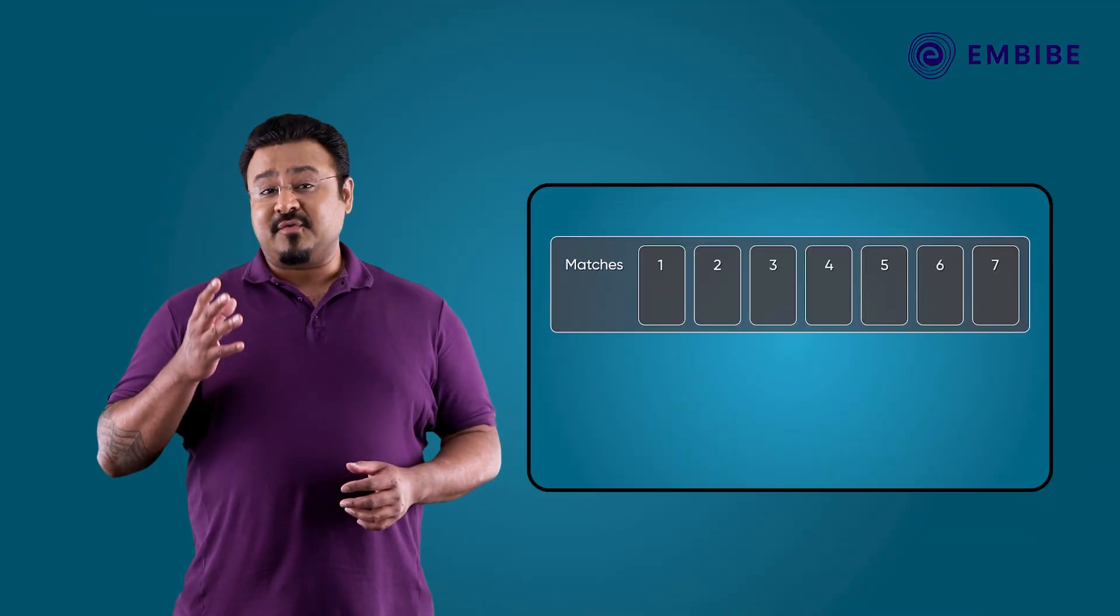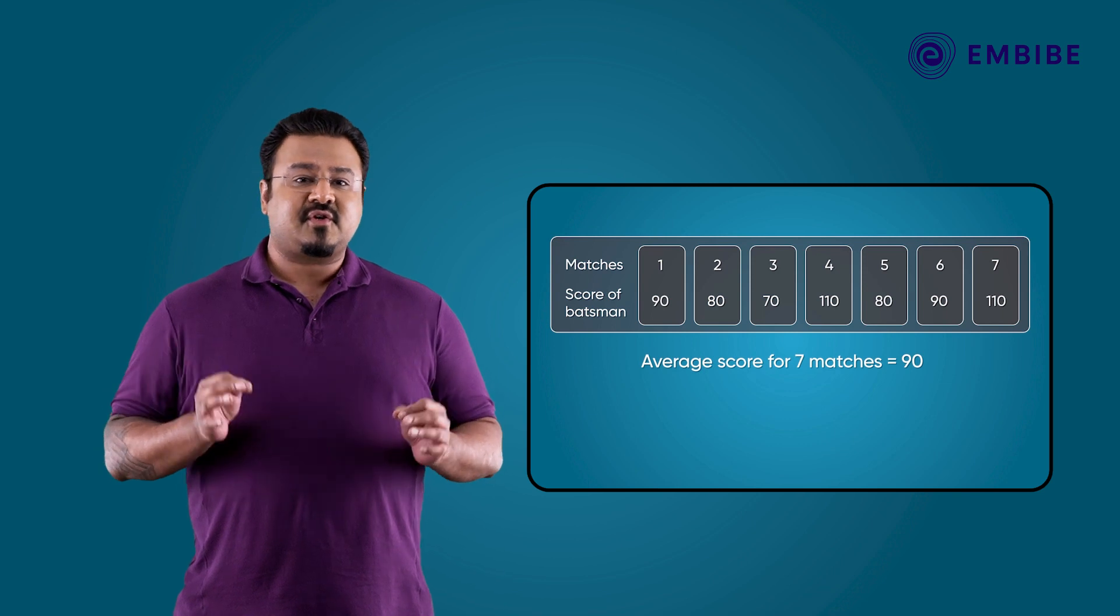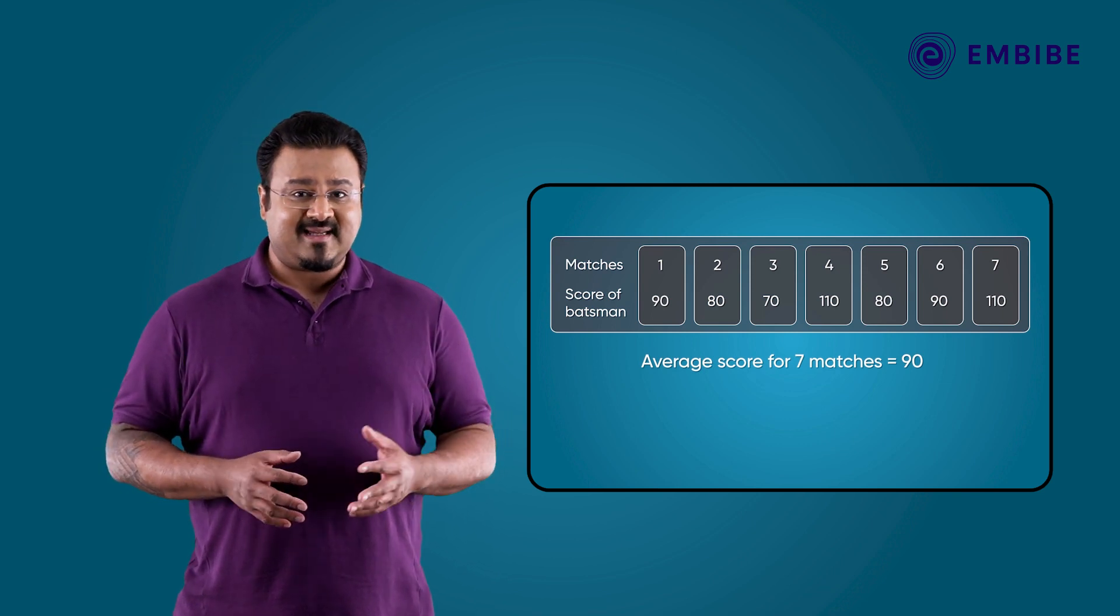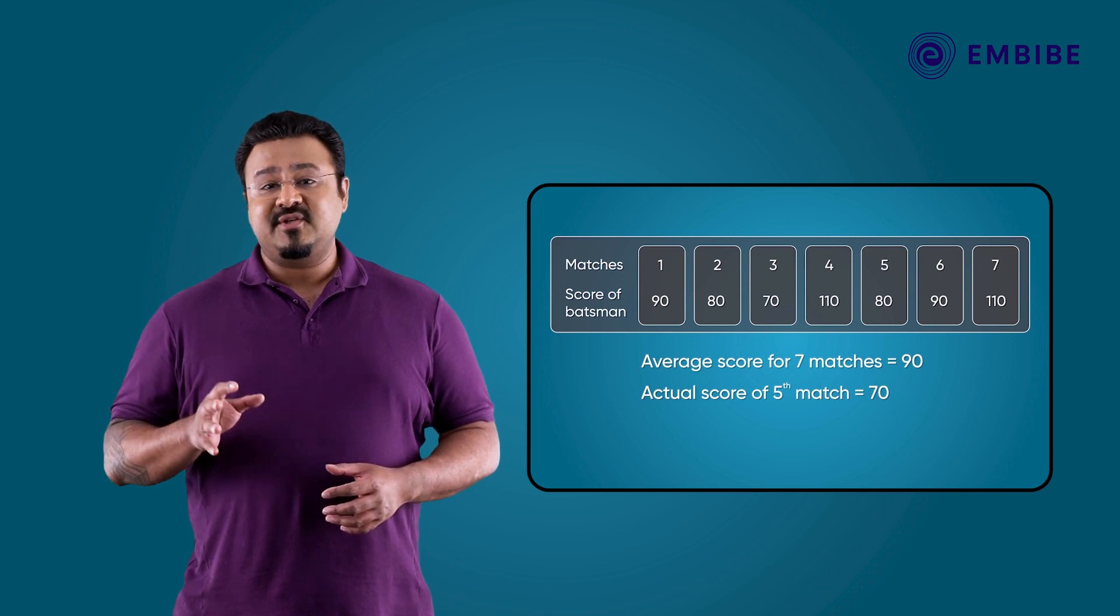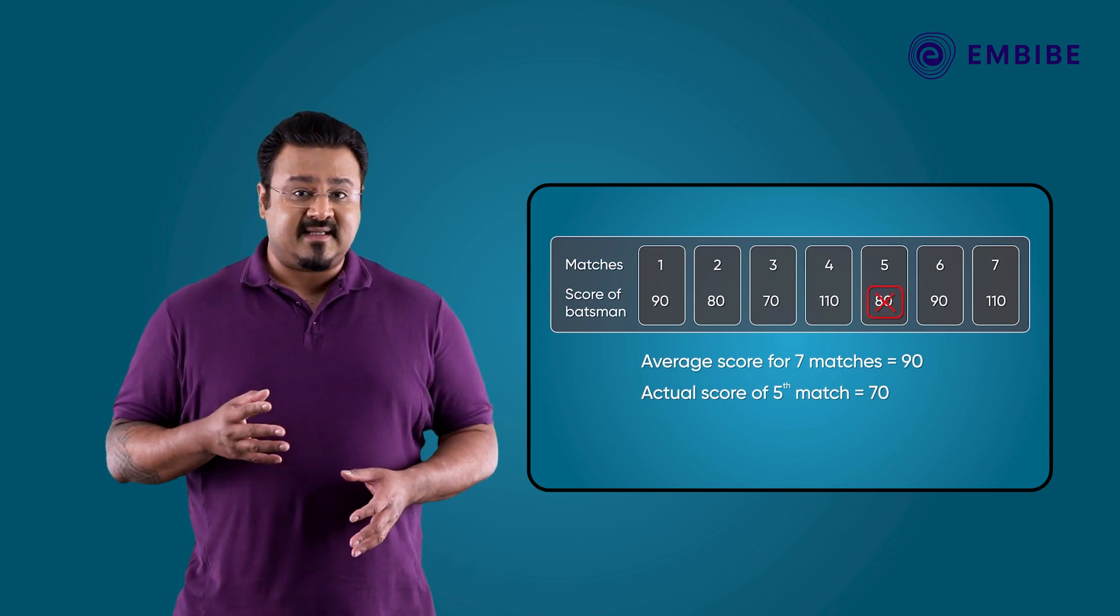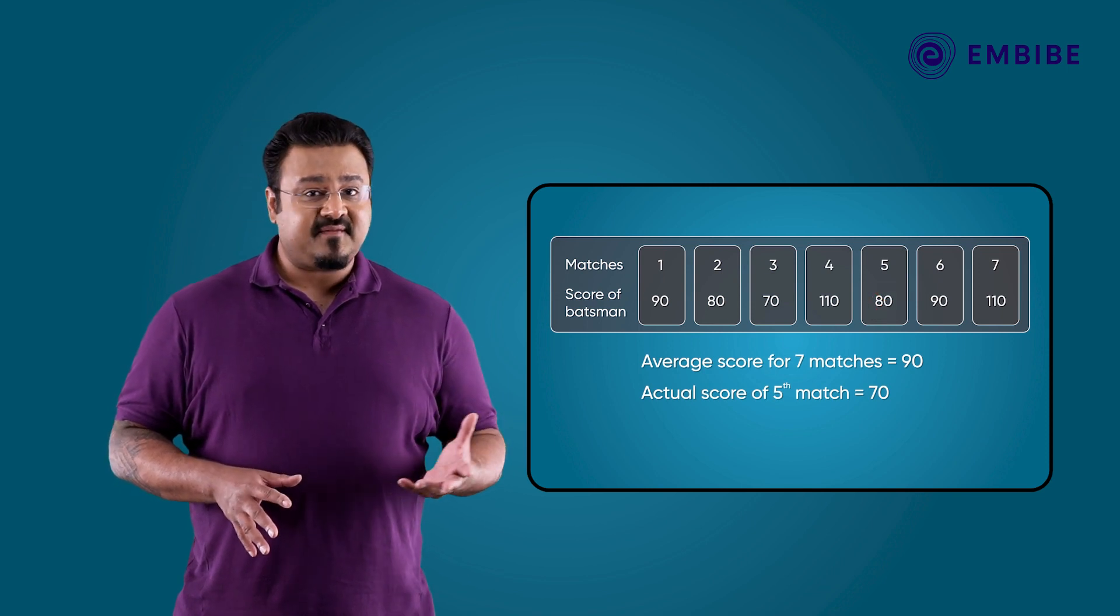In a series of seven cricket matches, the average score of the batsman was 90. It was found that in one of the matches, his score was mistakenly taken as 80 instead of 70.